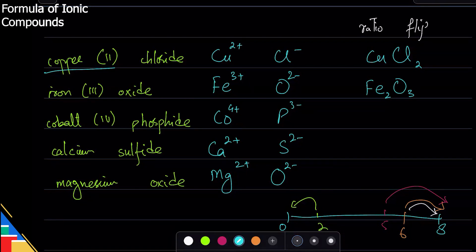Now what if the numbers are the same? Let's look at this one. For example, calcium and sulfide: calcium is plus two, sulfide is minus two. But the ratio is one to one because they're the same - they cancel each other out right away.